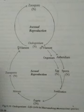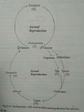Vegetative reproduction takes place by fragmentation. The filament breaks into small fragments, and each of them then develops into a new plant. This process is called fragmentation.